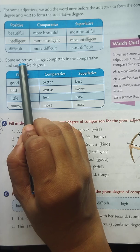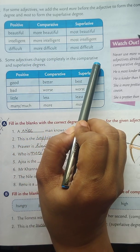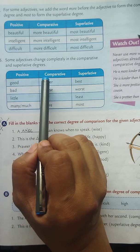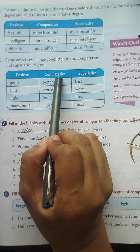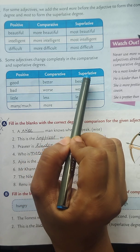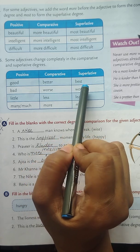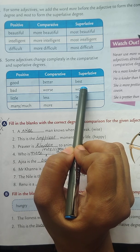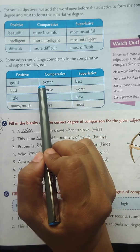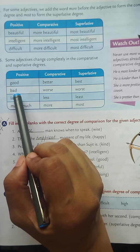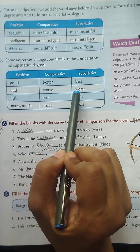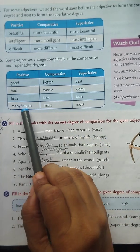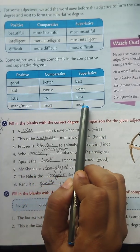Some adjectives change completely in the comparative and superlative degrees. Good — better — best. Bad — worse — worst. Little — less — least. Many or much — more — most.